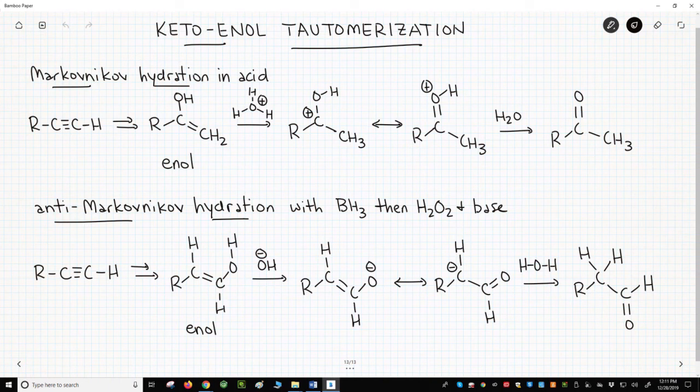In the Markovnikov hydration, that's this top reaction, we treated a terminal alkyne with water, H2SO4, and mercury sulfate. After multiple steps, we got an enol. How did this enol form a ketone?